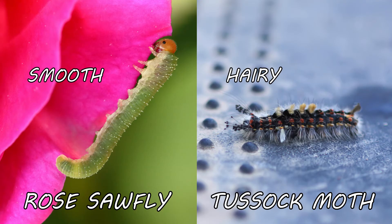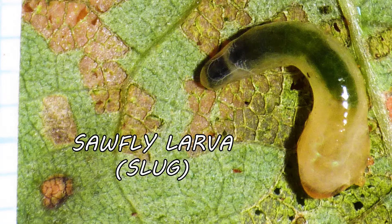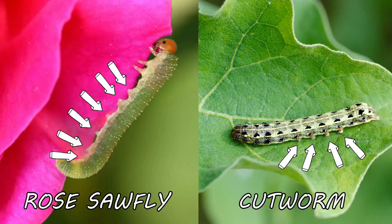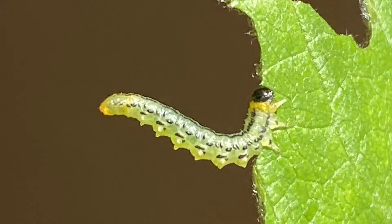The larvae resemble butterfly and moth caterpillars, but there are ways to tell a sawfly larva from a caterpillar. In general, most sawfly larvae have smooth bodies, whereas caterpillars can appear either smooth, hairy, or spiny. Some sawfly larvae are even slimy and translucent, and are referred to as slugs. Additionally, sawfly larvae will always have six or more pairs of prolegs, whereas caterpillars will only have five or fewer pairs of prolegs.